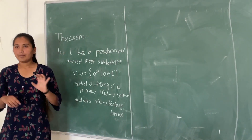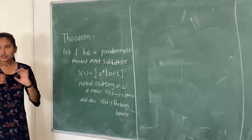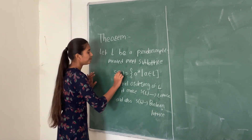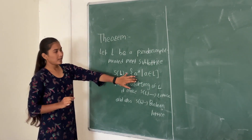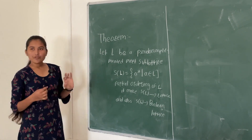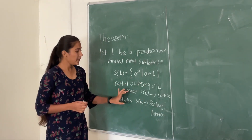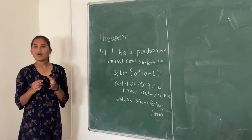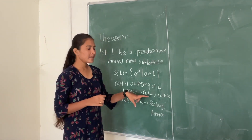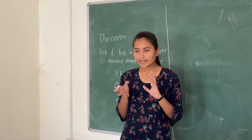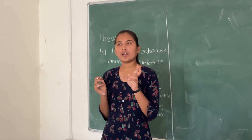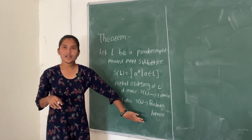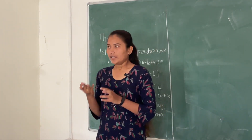Let L be a pseudo-complemented lattice, meaning every element has a pseudo complement, meaning A meet A star equals to 0. And we are considering the set SL, which is the set of pseudo complements, meaning A star, such that A belongs to L. So if we are taking partial ordering on L, it makes SL a lattice, and also SL is a Boolean lattice. Here we want to show SL is a lattice, meaning for proving anything is a lattice, we prove that A meet B belongs to L and A join B belongs to L. And for proving it is a Boolean lattice, it must be a complemented and distributed lattice.